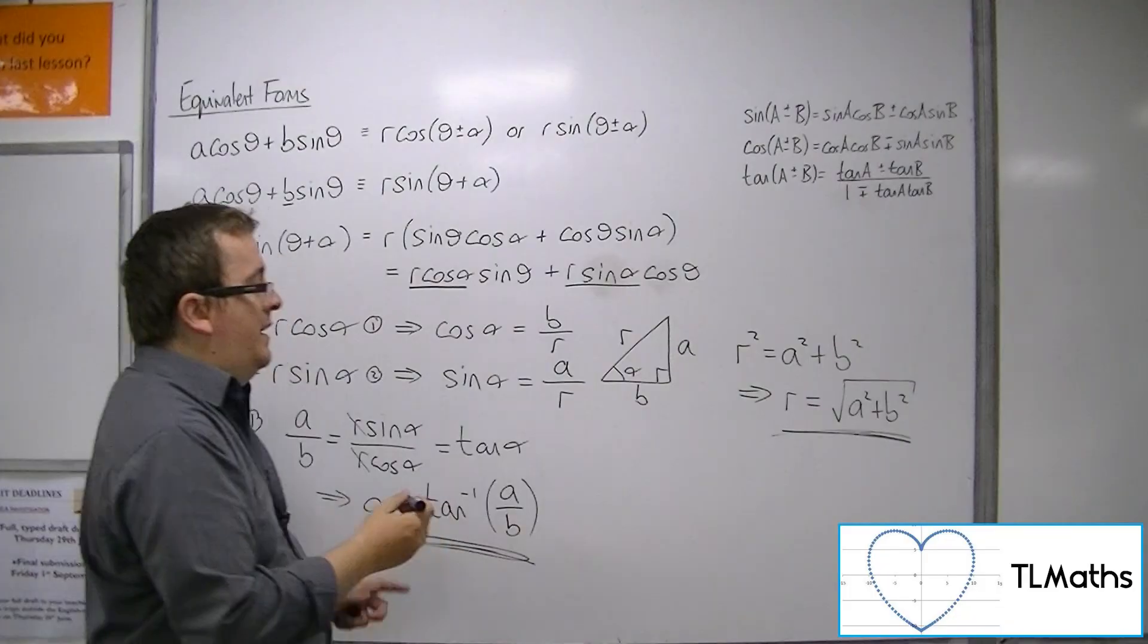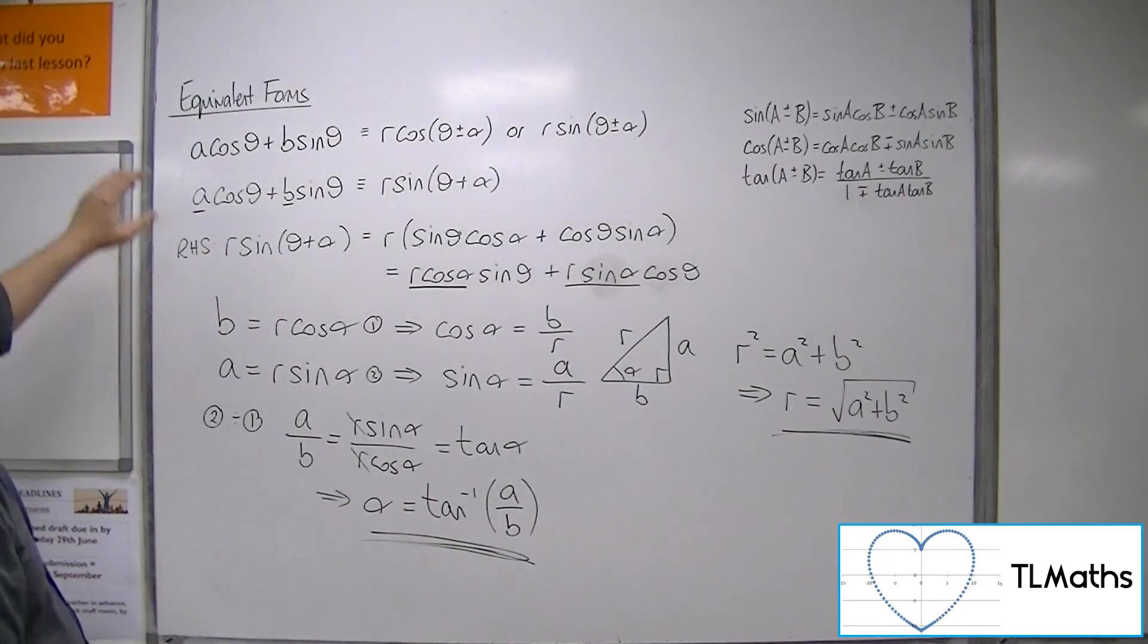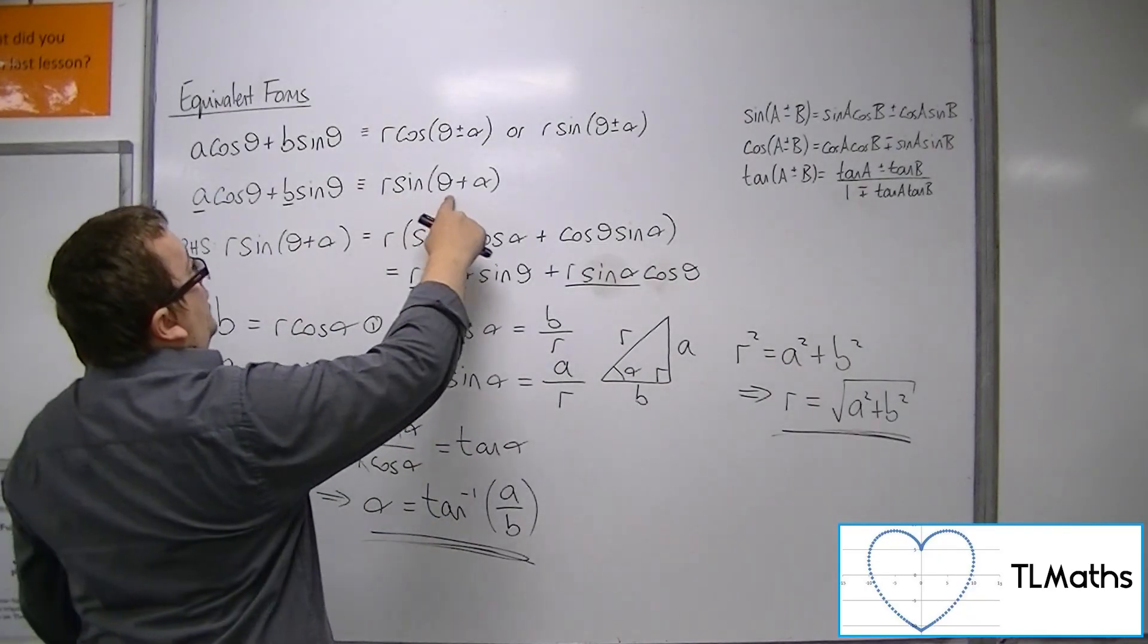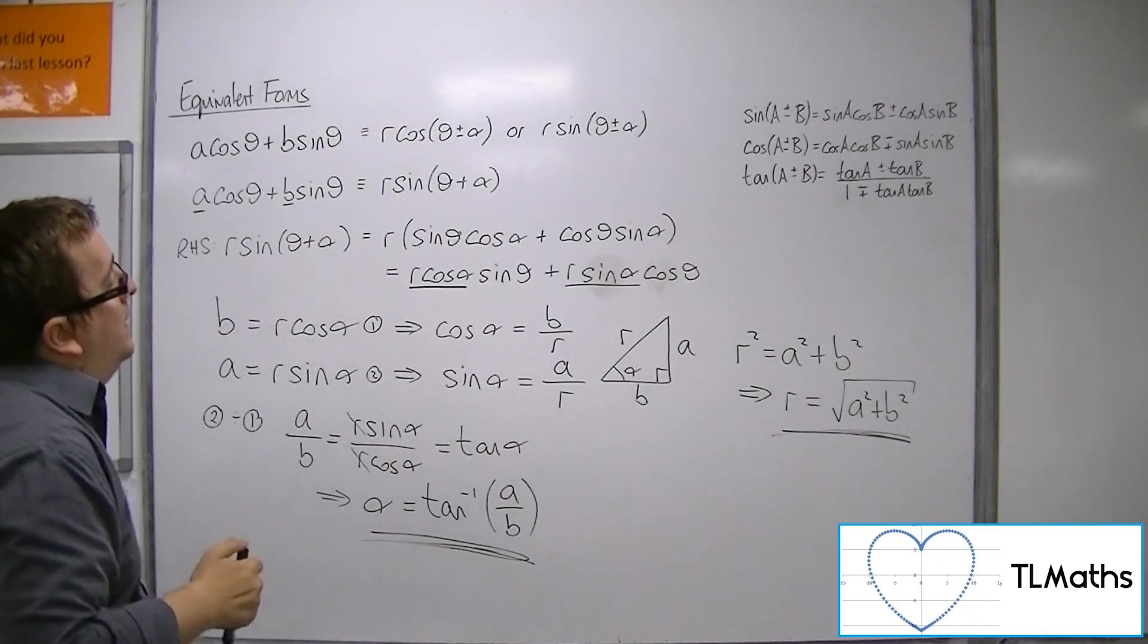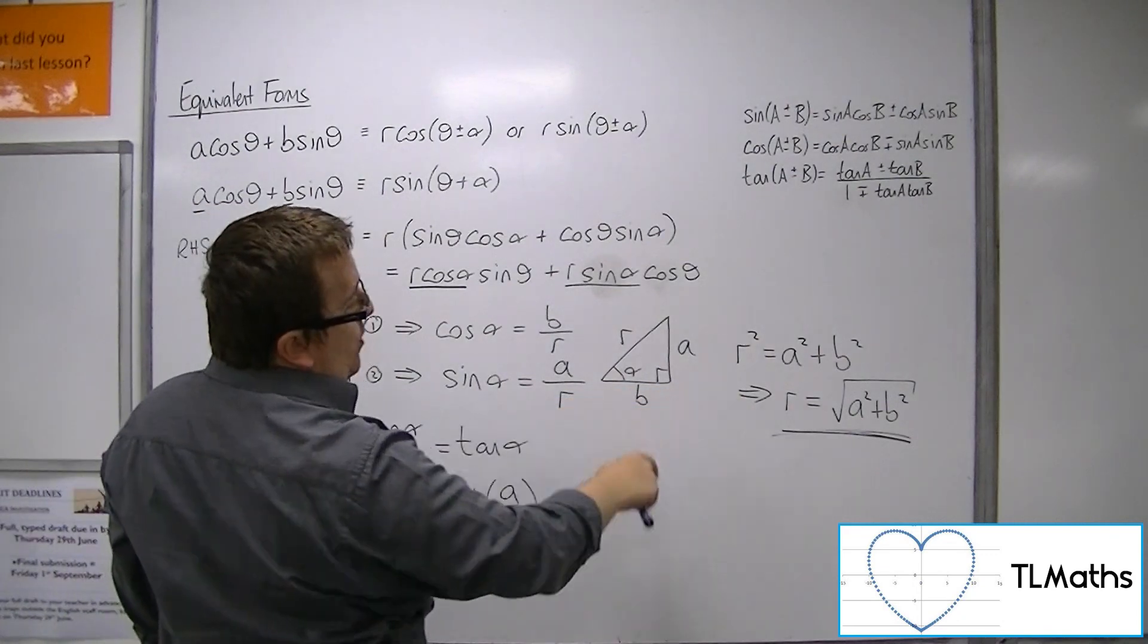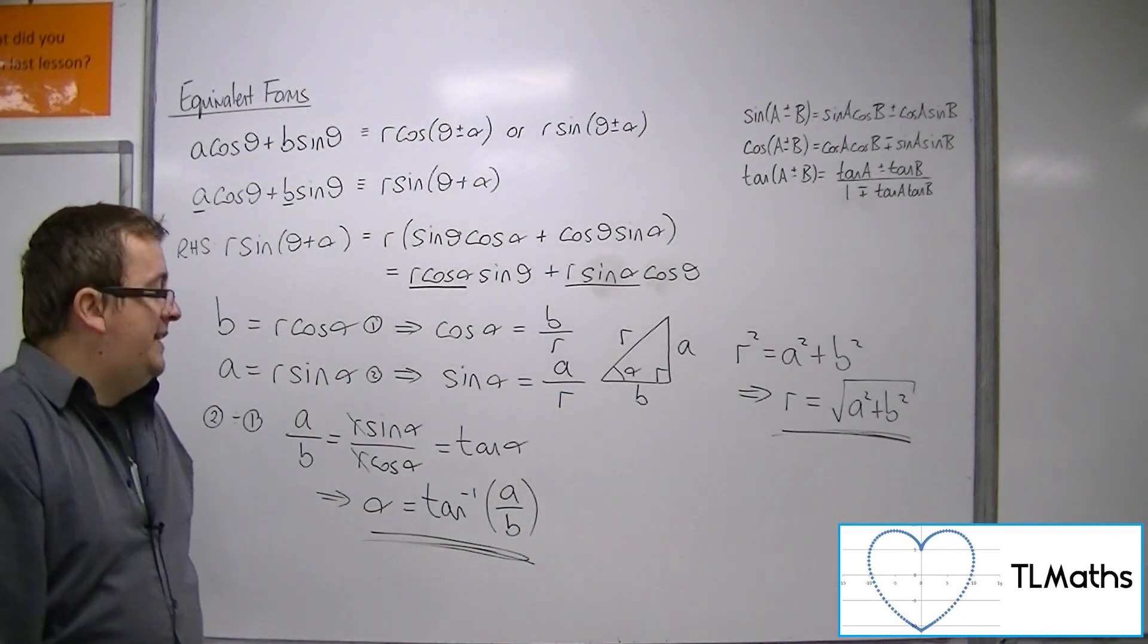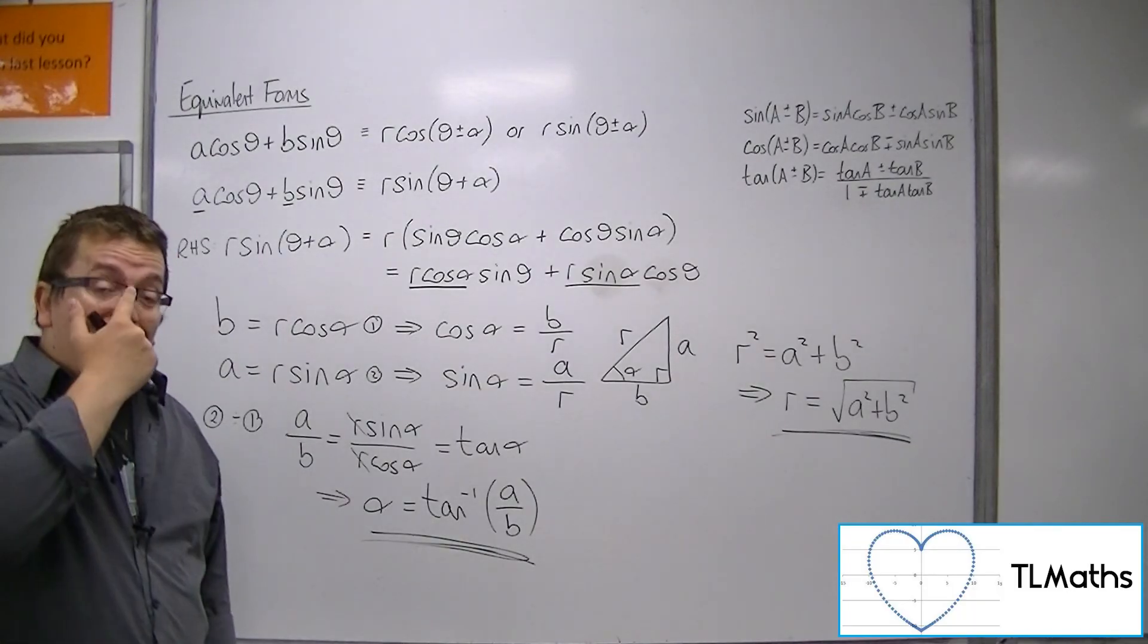So, this is how it works. a cos theta plus b sine theta is r sine theta plus alpha, where r is the square root of a squared plus b squared, and alpha is the inverse tan of a over b.